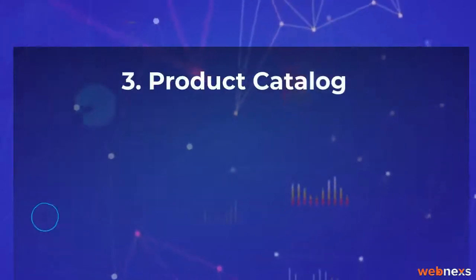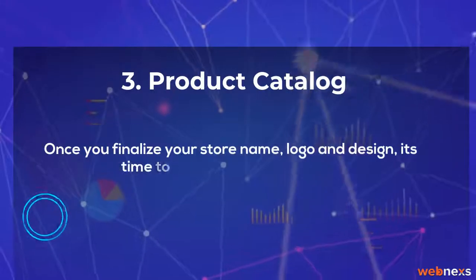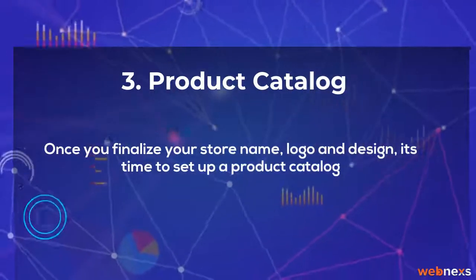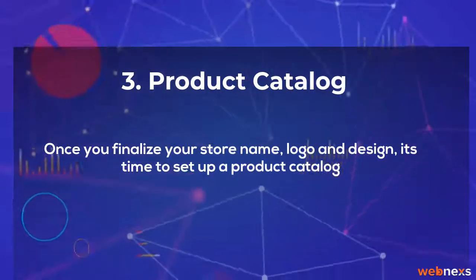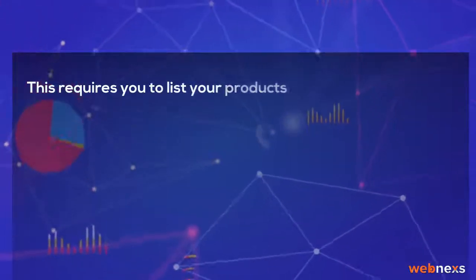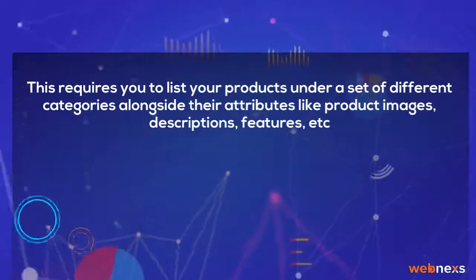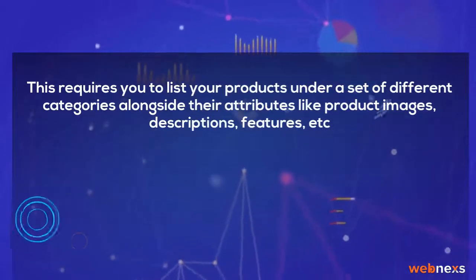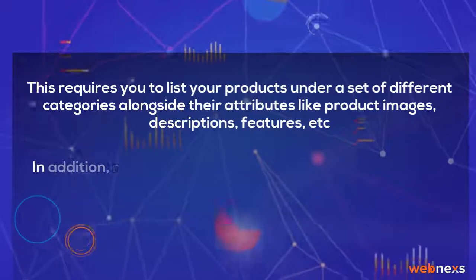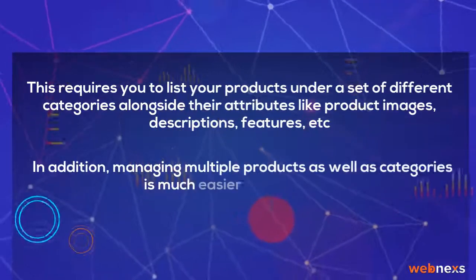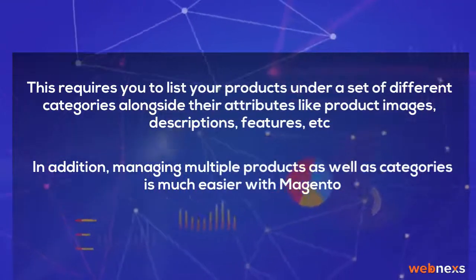Product catalog. Once you finalize your store name, logo, and design, it's time to set up a product catalog. This requires you to list your products under a set of different categories alongside their attributes like product images, descriptions, features, etc. In addition, managing multiple products as well as categories is much easier with Magento.